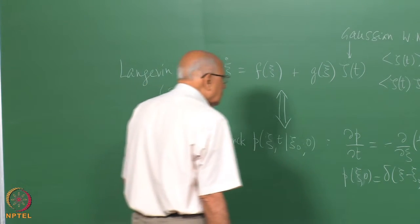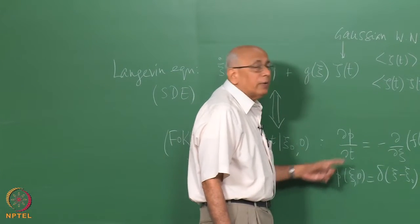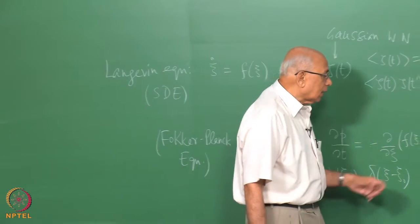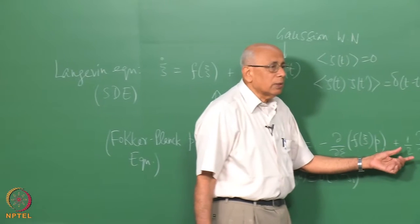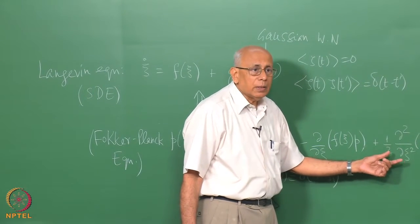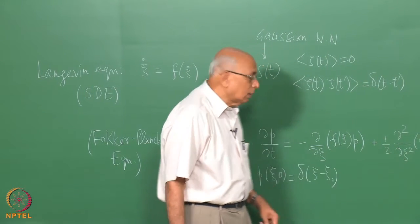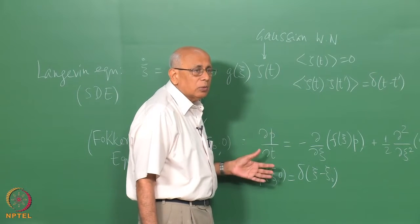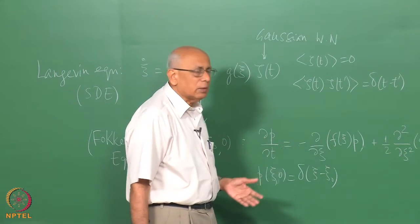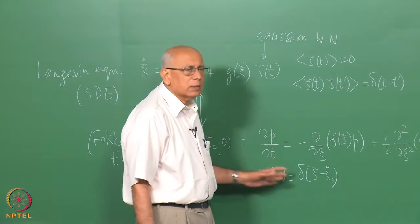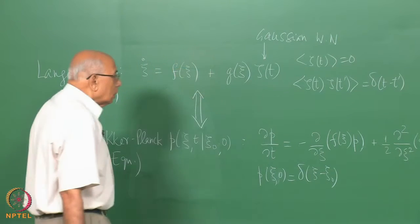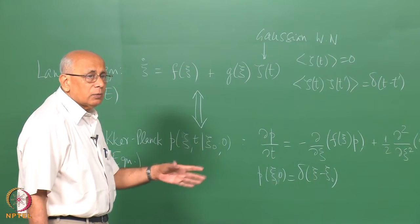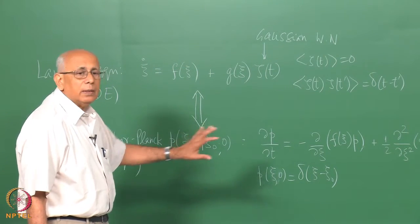This equation is not very simple to start with because it is second order in the random variable xi and first order in time, so it is a complicated partial differential equation. The solution is also fairly complicated. Now the cases we have already looked at fall squarely within this.